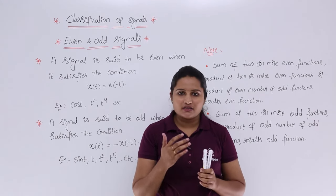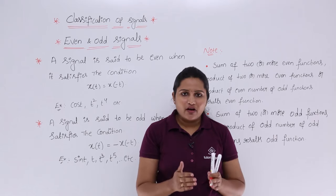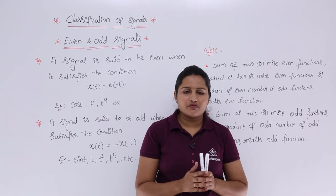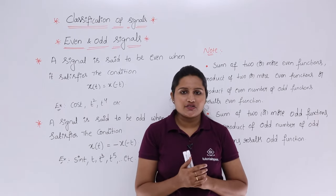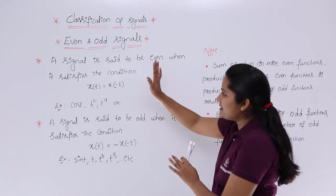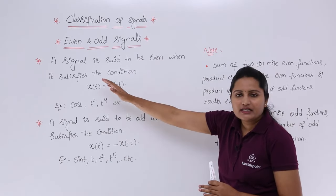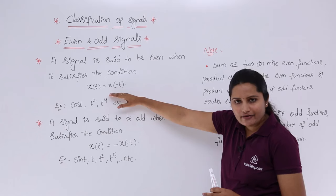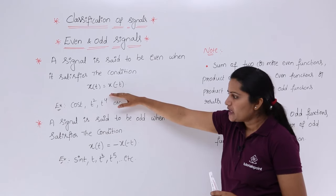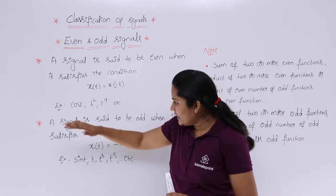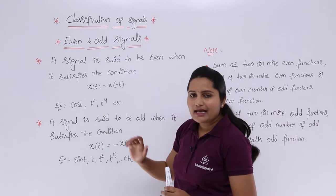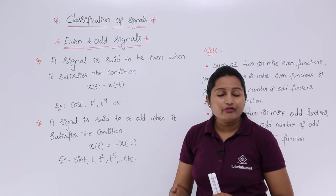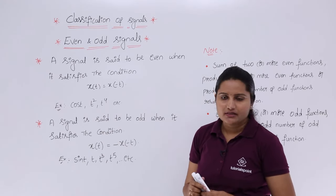If that condition is not satisfied, if you are getting a minus in the reflected version, then that is called an odd signal. A signal is said to be even when it satisfies the condition x(t) = x(-t). Here we can take examples of cos(t), t², t⁴, etc. as even signals.